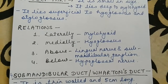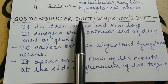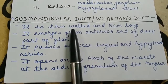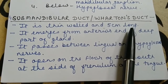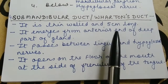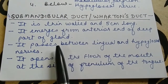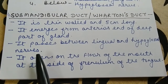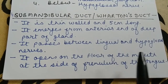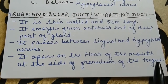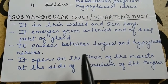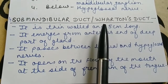Now we see the duct of the submandibular gland. The submandibular duct is also known as Wharton's duct. It is thin-walled and 5 cm long. It emerges from the anterior end of the deep part of the gland. It passes between the lingual and hypoglossal nerves, and opens on the floor of the mouth at the side of the frenulum of the tongue.